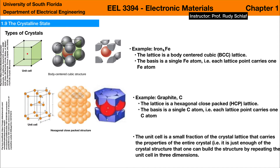Here are some more examples. Iron makes a body-centered cubic lattice, abbreviated BCC. Similar to the FCC structure, we start with an ordinary cube of atoms and add one atom into the center, making it a body-centered cubic lattice.